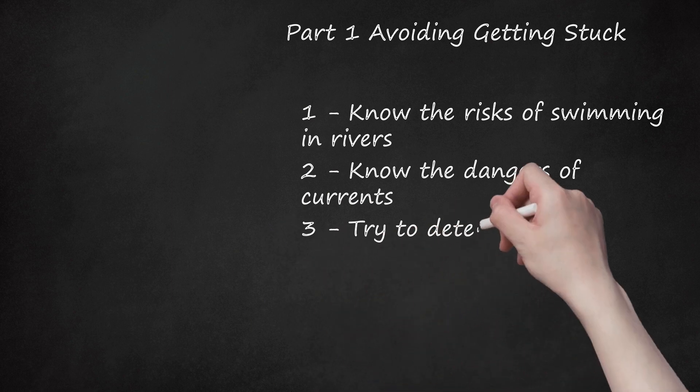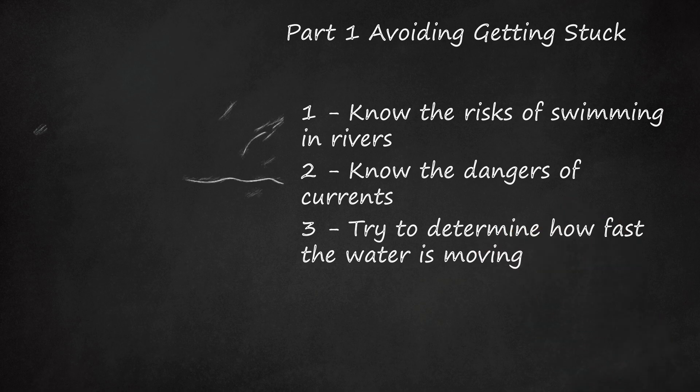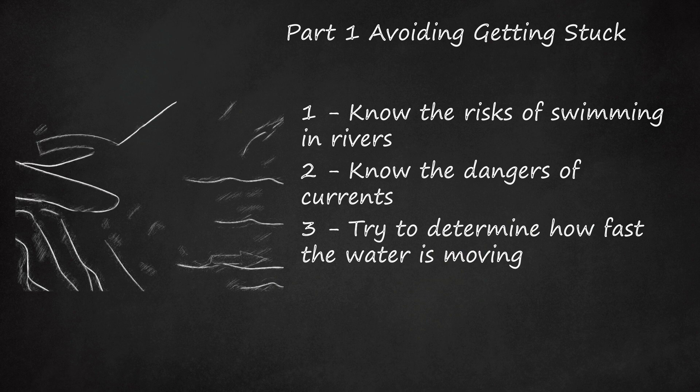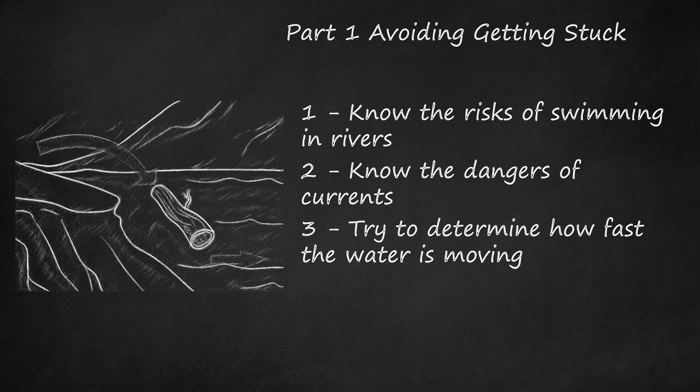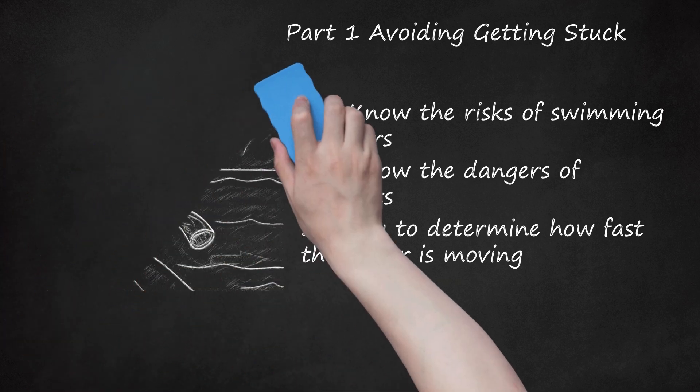Try to determine how fast the water is moving. Throwing objects, especially buoyant objects such as wood, a stick, soda bottle, or a ball into the middle of the river will begin to give you an idea of the speed. But remember, there is sometimes a current on the surface and an undercurrent. The speed on the surface will not give you an indication of the undercurrent. Just because the surface is moving slow does not mean it is safe.